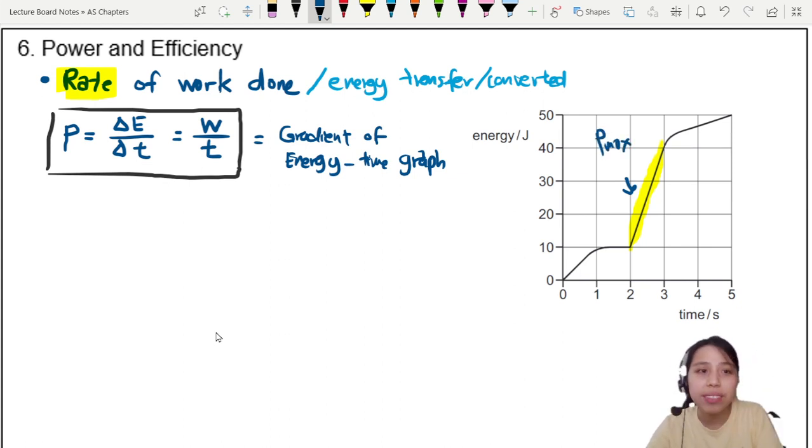Why? Because power is the gradient, the rate of change or transfer of this energy. So how to find? You do gradient. It's from a past paper. I'll let you go find out where this past paper is. But you can find this thing, and this is the gradient. It's maximum here.